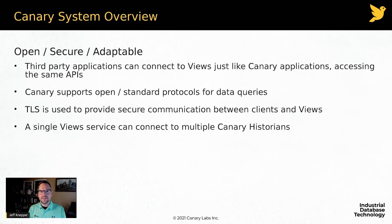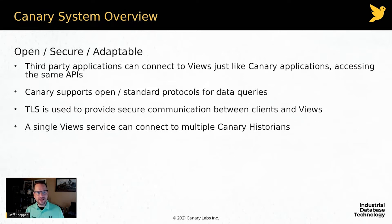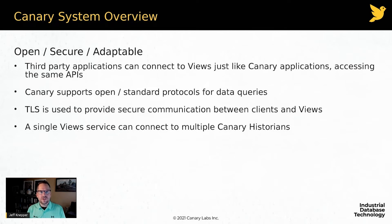We'll talk more about that in the next video when we cover data feeds. For security, anytime we're moving data from archive to client we're using TLS — it's encrypted in transit. You'll recall it was also encrypted in transit when logging, and encrypted at rest inside the archive. That means full authentication, authorization, and encryption. For adaptability, Views can connect to multiple historians and show multiple data pictures — complete adaptability on the Views service.